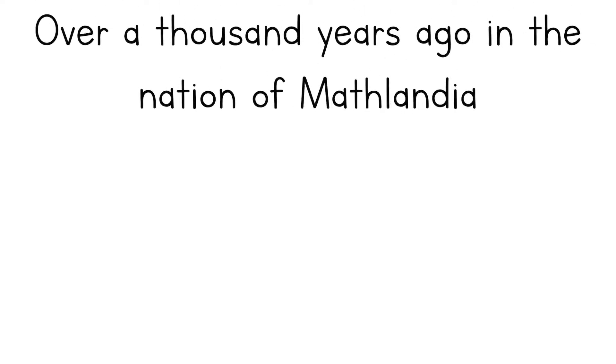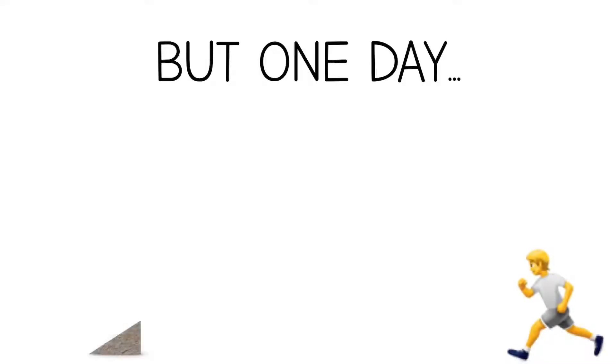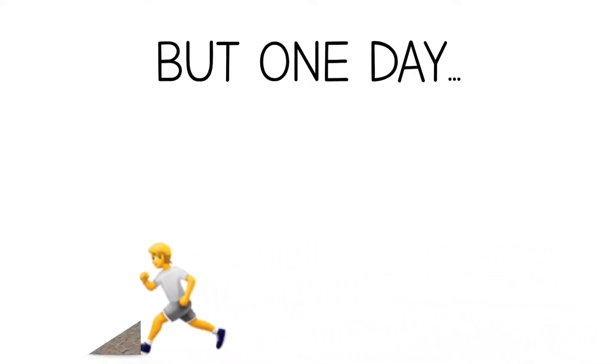Over a thousand years ago in the nation of Mathlandia, there was a boy named Trigg. What you should know about Trigg is that he was a great runner. Every day, Trigg ran around Mathlandia and never ran into any issues. But one day, Trigg went out on his usual run and stubbed his toe on a hard right triangle-shaped rock.